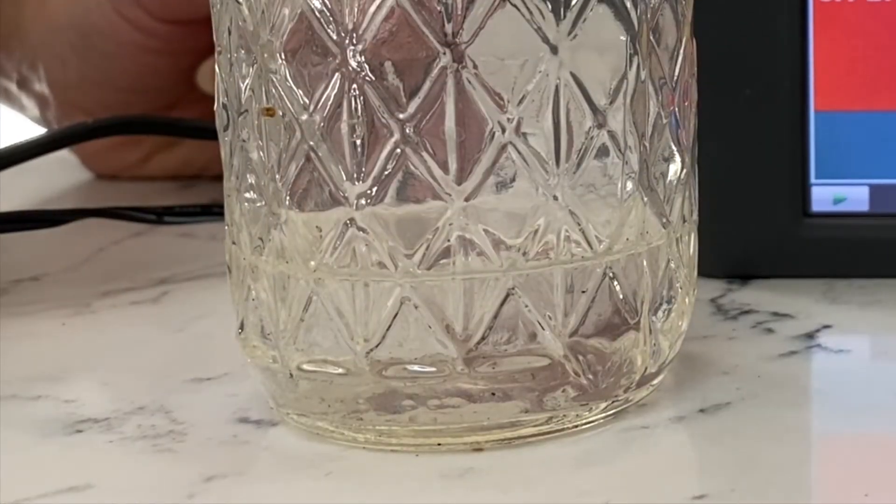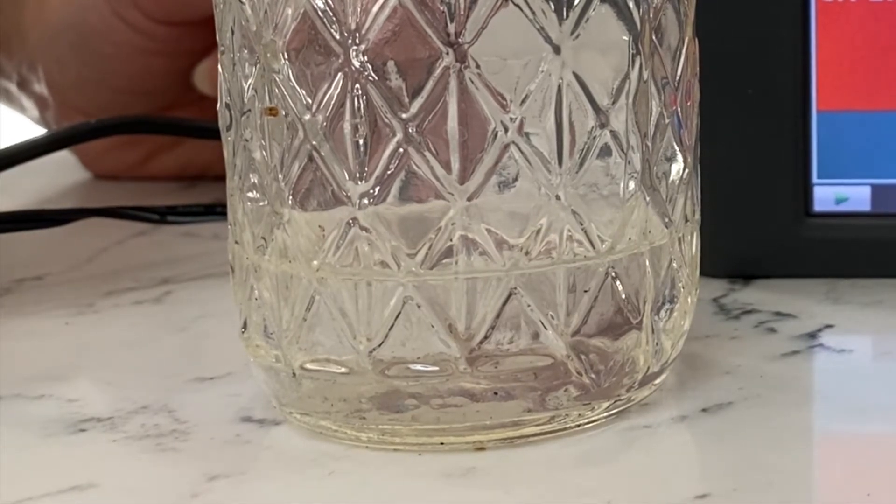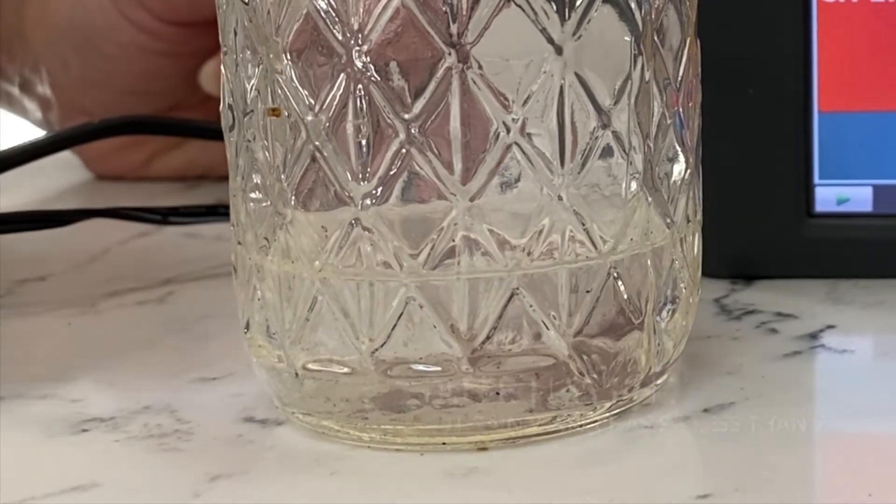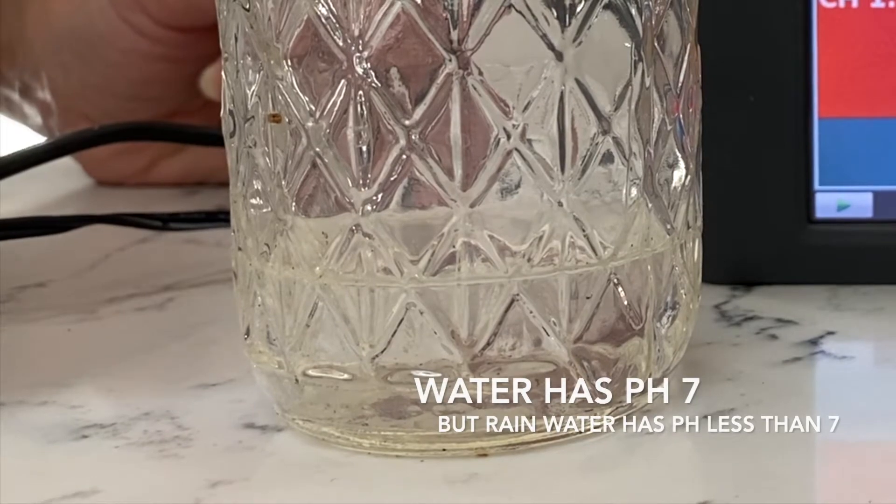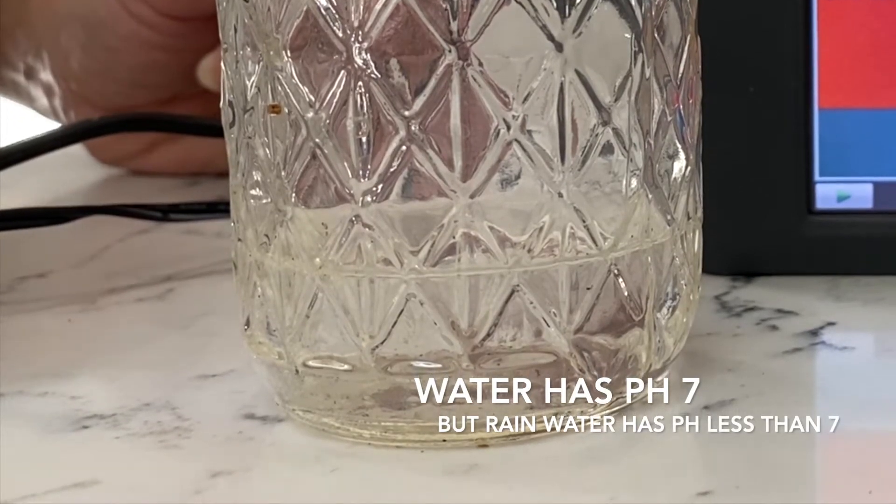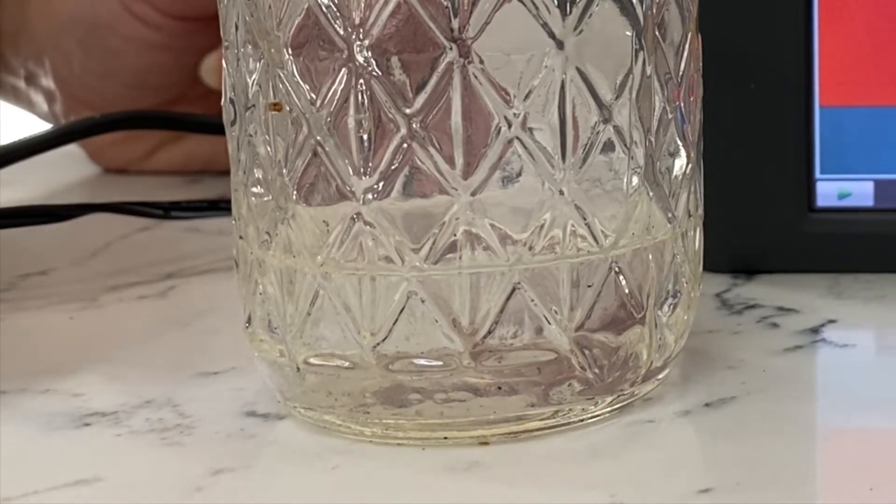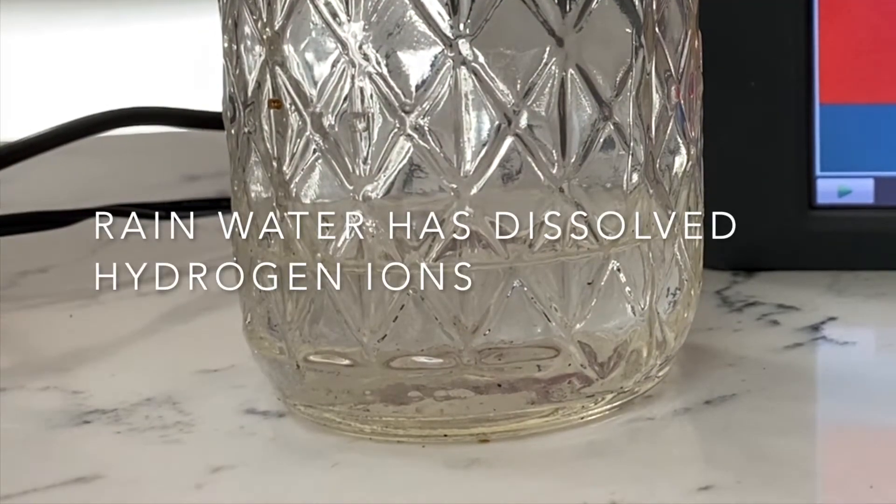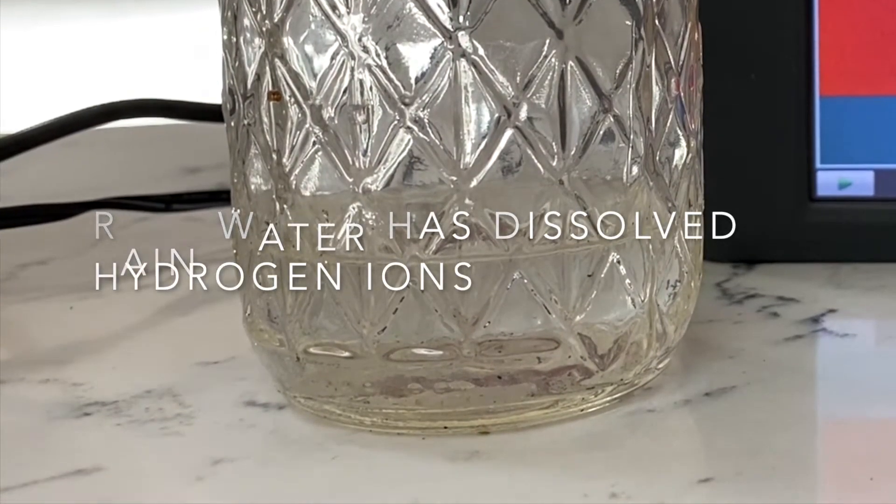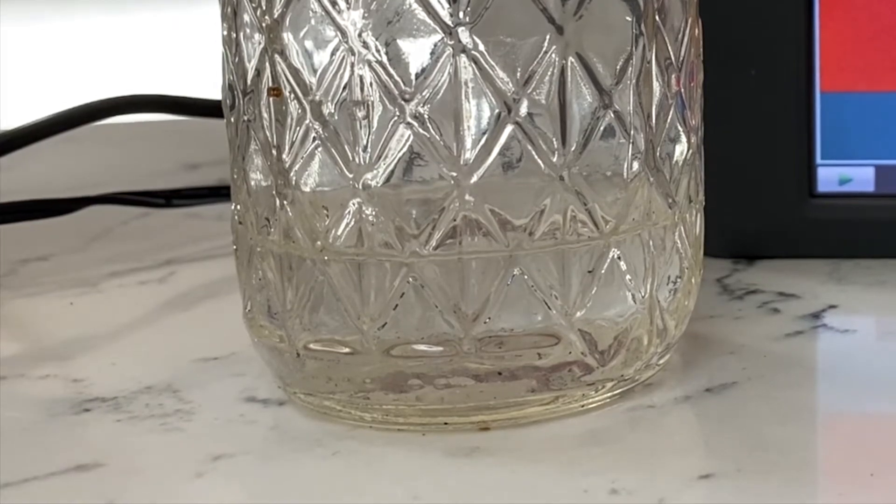So a few things about rain. We know that rain is naturally acidic because of atmospheric carbon dioxide that's dissolved into the rainwater. Through a series of reactions, it generates hydrogen ions in the water, same as with ocean acidification.